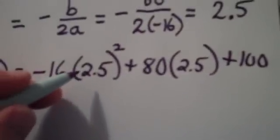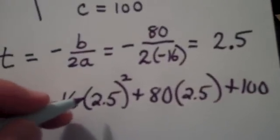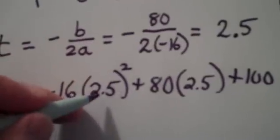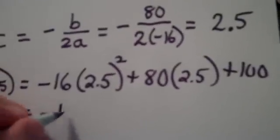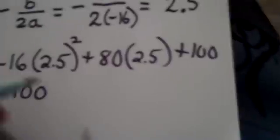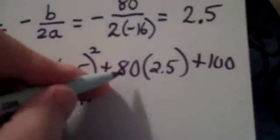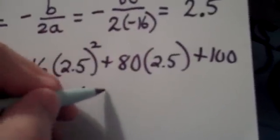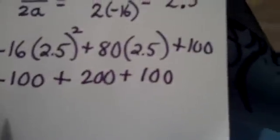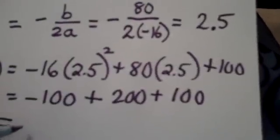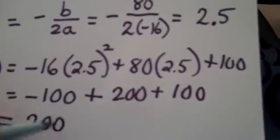We have negative 16 times 2.5 squared plus 80 times 2.5 plus 100. When we take 2.5, square it, and multiply by negative 16 on a calculator, we get negative 100. Plus 80 times 2.5 is 200, and of course we have the 100 at the end. This ends up arithmetically becoming 200.